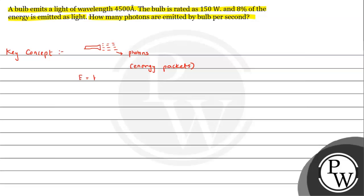According to this, we can say the energy of one photon is given by the expression E = h times nu, where h is Planck's constant and its value is 6.62 × 10 raised to minus 34 joule-second. Nu is the frequency of the radiation or the light that has been emitted.